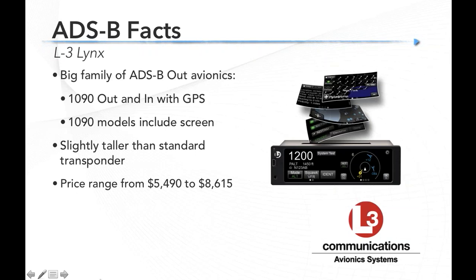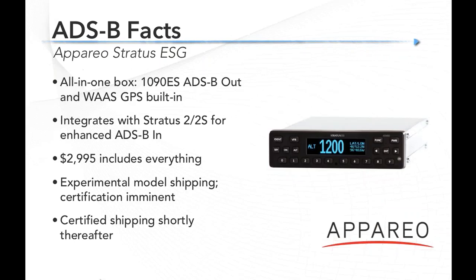Next option is from L3, which has a wide family of avionics in both panel and remote mount. This model has gotten a lot of attention because it actually has a display on the transponder face showing inbound products like weather and traffic — typically you'd view those on an iPad or multifunction display, but L3 puts it right on the transponder. Pricing is a little on the higher side due to that additional functionality. Also note it's slightly taller than a standard transponder, so if replacing a KT76, you may need some panel rearrangement.